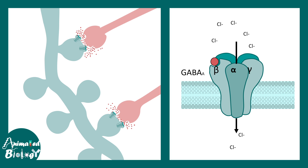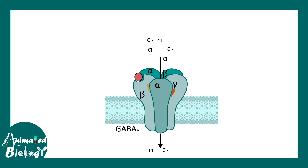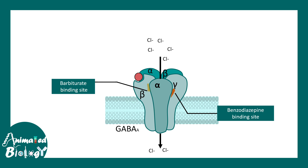Upon binding to GABA, the channel leads to chloride influx into the cell. Overall, barbiturates and benzodiazepines enhance the inhibitory effect of GABAergic signaling. Here in orange you can see the benzodiazepine binding site, and this is the barbiturate binding site. Both drugs bind to a location other than the GABA binding site, and their sites of action are also different from each other.